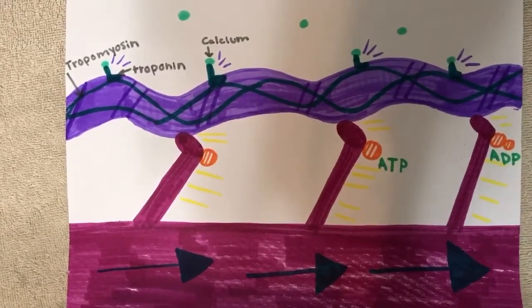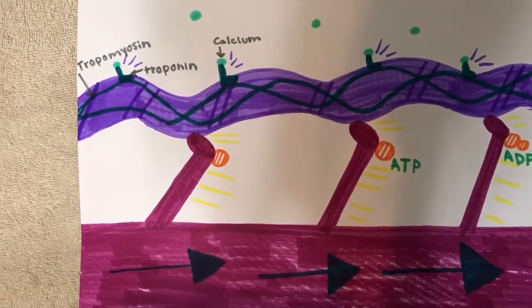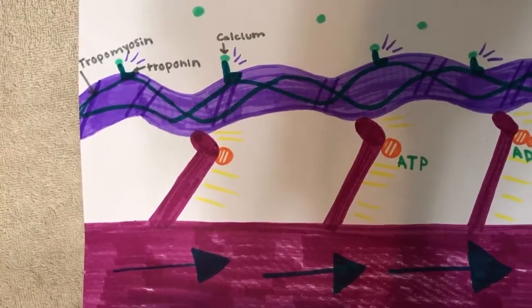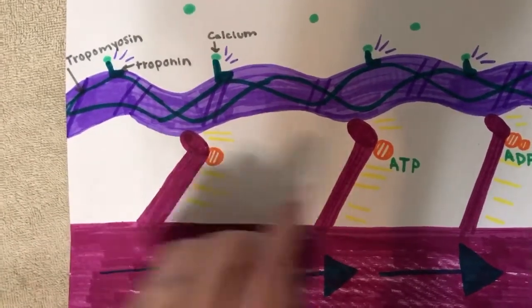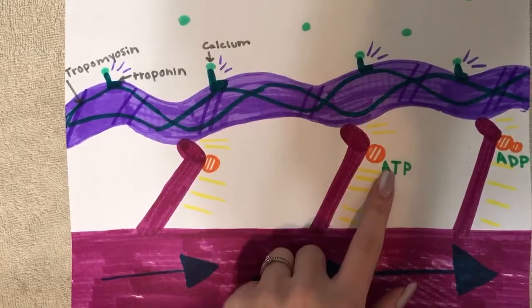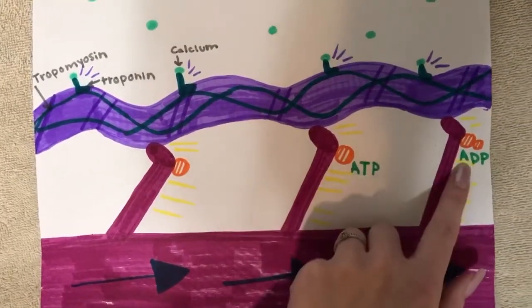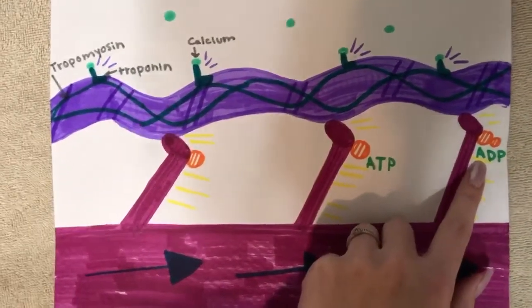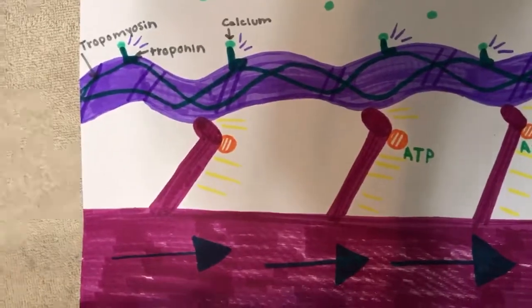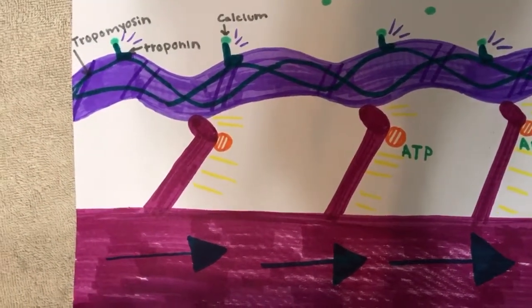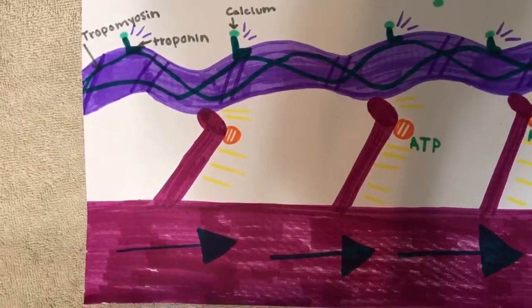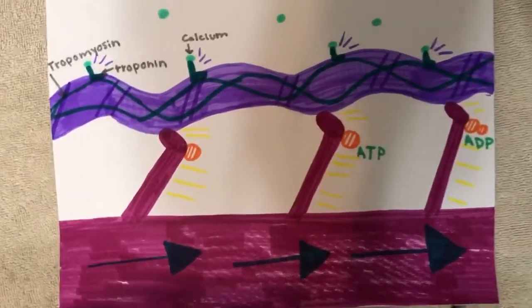Myosin head will then bind to the ATP, causing the hydrolysis process, which turns the ATP into ADP. So, that's what we're showing right here, is the ATP, which is then binded and turns through hydrolysis into the ADP. This will continue as the muscle contracts. So, the cross-bridge cycling causes the sarcomere to shorten.